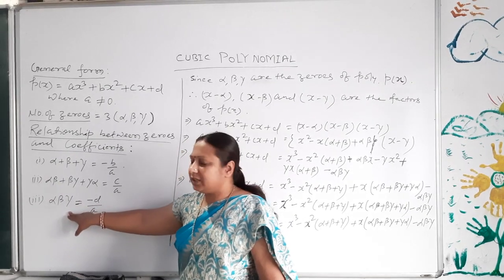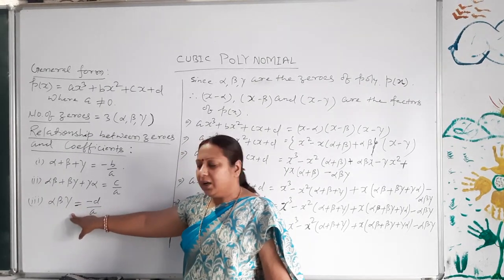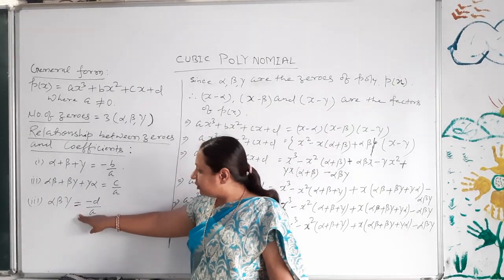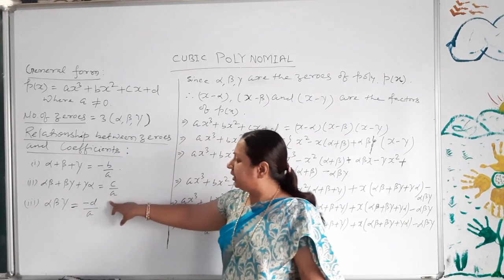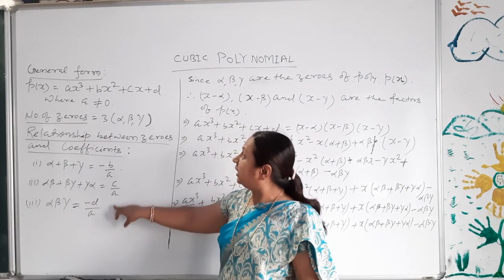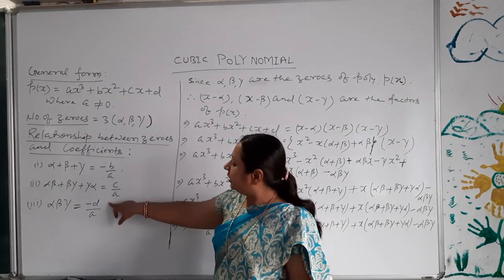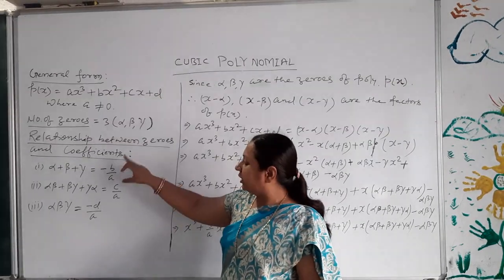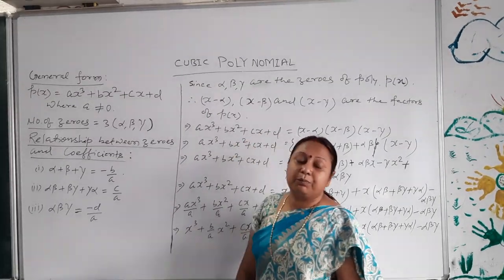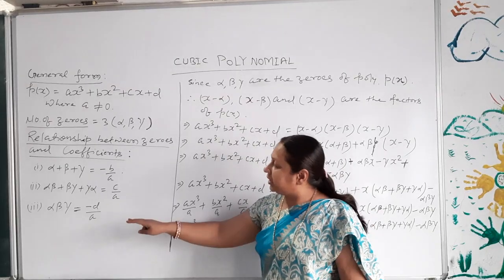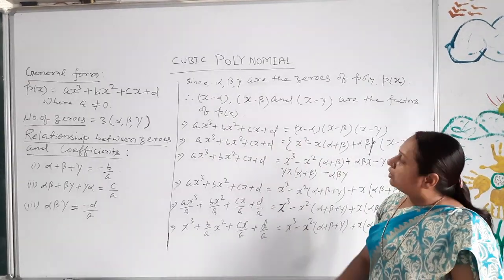The third relationship is the product of zeros: alpha·beta·gamma equals minus d by a, where d is the constant term and a is the coefficient of x³.